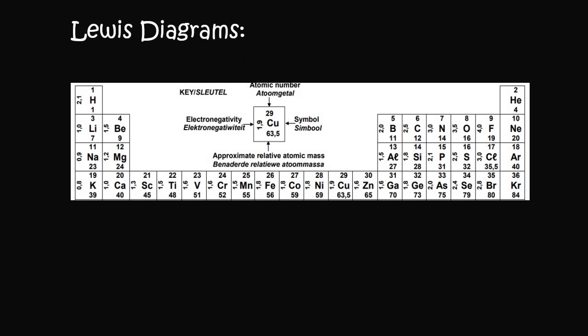Now you know the basics of drawing a Lewis diagram for each atom. We're going to start using that to help us identify the way things bond. For example, if I asked you to take carbon and hydrogen and bond those together — these individual circles that we can see are electrons, and electrons like to be in pairs of two.